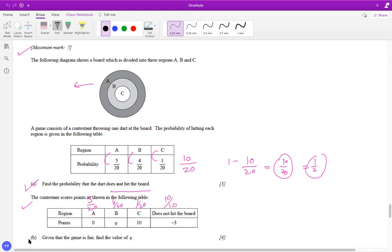Now, they're saying the game is fair. Find the value of Q. If the game is fair, the expected earning 5 over 20 times 0, 4 over 20 times Q, plus 1 over 20 times 10, plus 10 over 20 times negative 3. This should be 0. If this is a fair game, and if you solve for the value of Q, you get the answer.